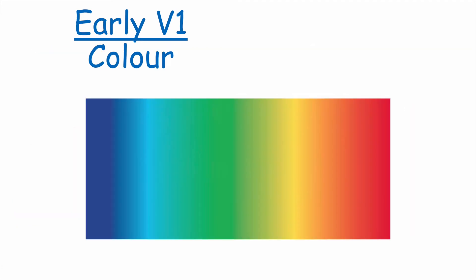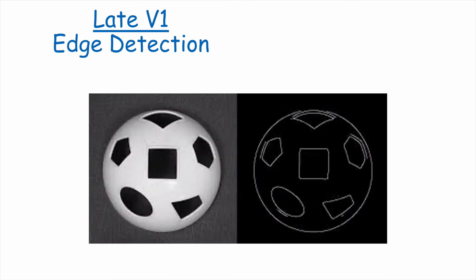Neurons in the early stages of visual processing in area V1 also encode color. As visual information flows through area V1 and you get to the later stages of processing in this neural region, neurons are sensitive to edge detection, as you can see here on the right.